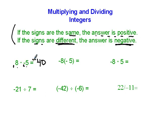Here we have -8 times -5. 8 times 5 is 40, and we have two signs, negative signs, that are the same, which means our answer is positive.